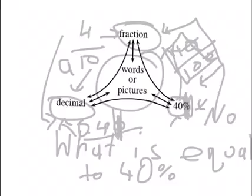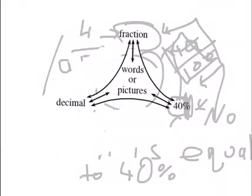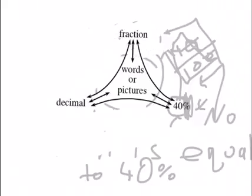Now for the words or pictures, we can do both of them if you like, you can do one of them if you like. If you want to do words, you can write 40 hundredths.